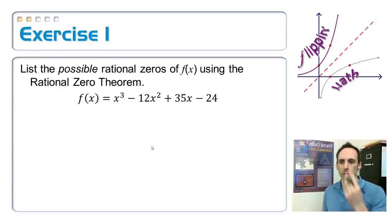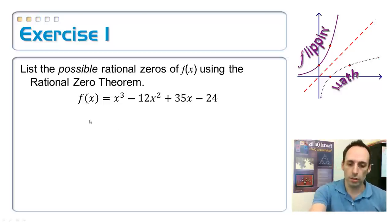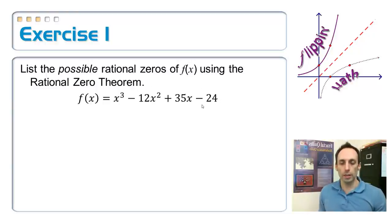So this first exercise lists the possible rational zeros of this equation. I'm not solving it just yet, just listing out all of the possibilities. So I know I need all of the factors of 24 divided by all the factors of the leading coefficient, which is 1. Whenever the leading coefficient is 1, all of our possibilities are just going to come from the constant term.